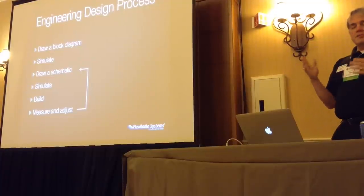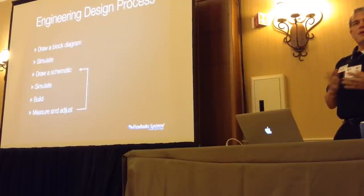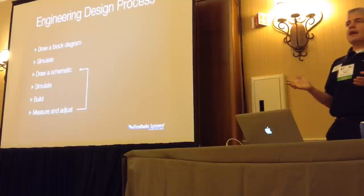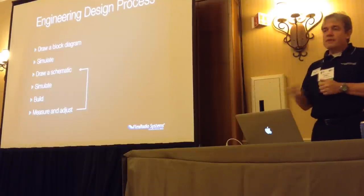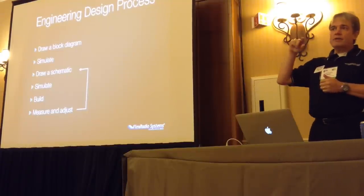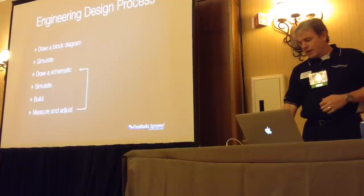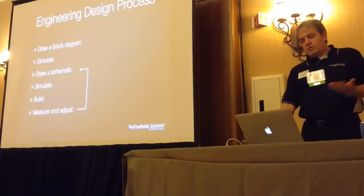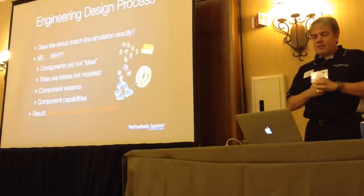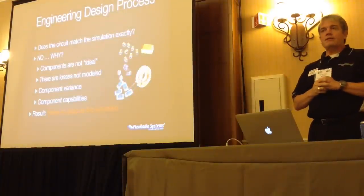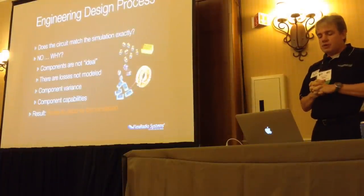We draw a schematic, we simulate that, we build it, and then we measure it and say: did it actually do what we said it was going to do in our simulation? And if it doesn't, we go back, we change the schematic, and we redo all that. So do we just make one pass through that process and have it work? No, it does not always work every time, so the question is why.